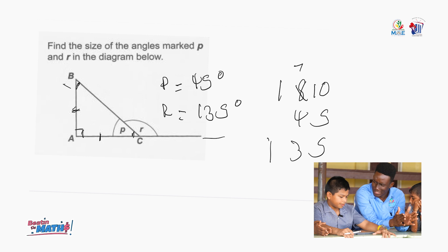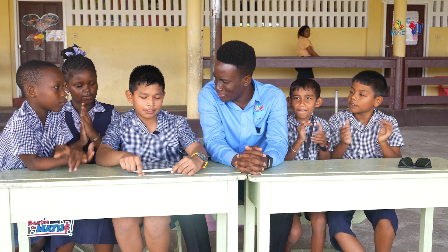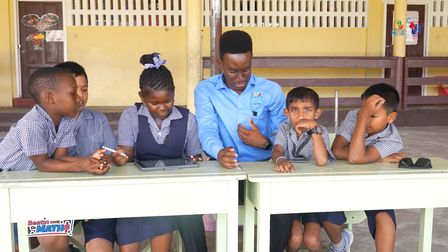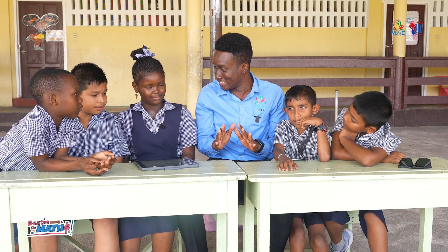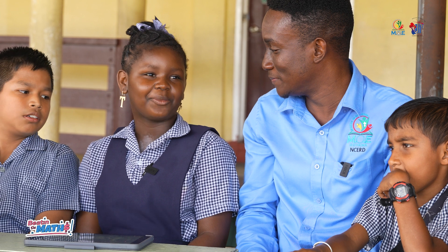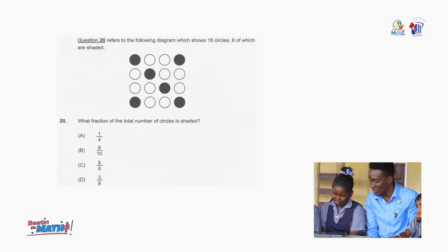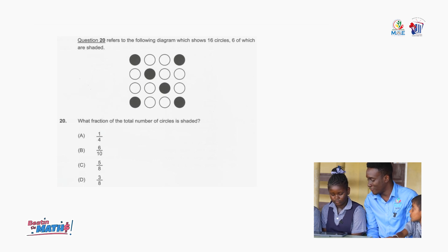So we have our next guest here with us today. What is your name? My name is Tarifa. Tarifa, which class are you in? Grade 6. So you're sitting the national grade 6 assessment in a few weeks. What are you thinking — beat the maths or the maths beating you? I'll beat the maths. 100% sure? I think like 90% sure. So your question says: the following diagram shows 16 circles, 6 of which are shaded. Write the fraction of the total number of circles shaded. The floor is yours.